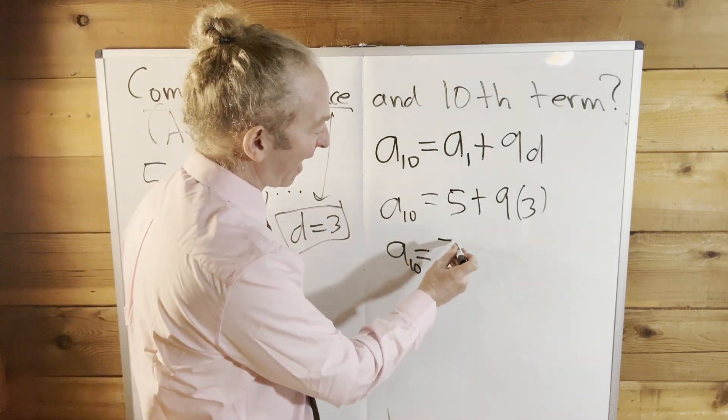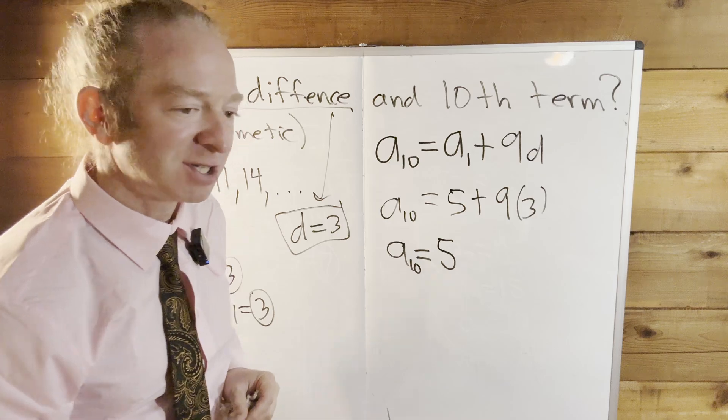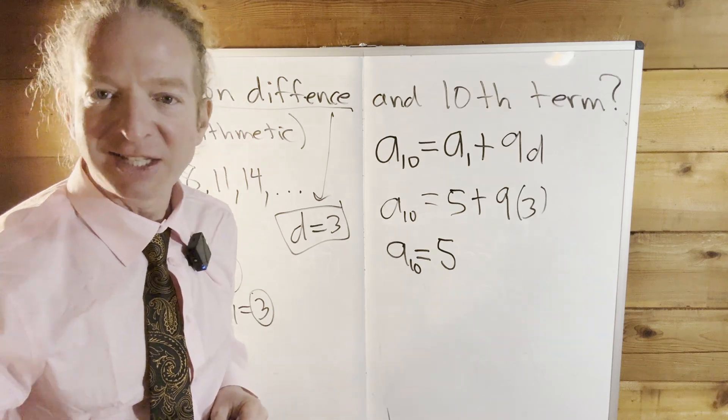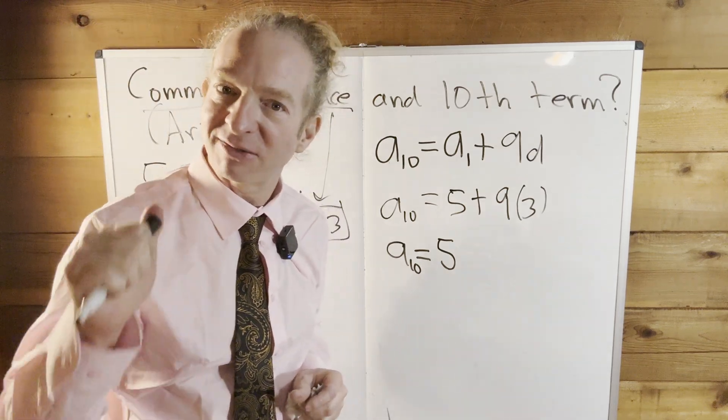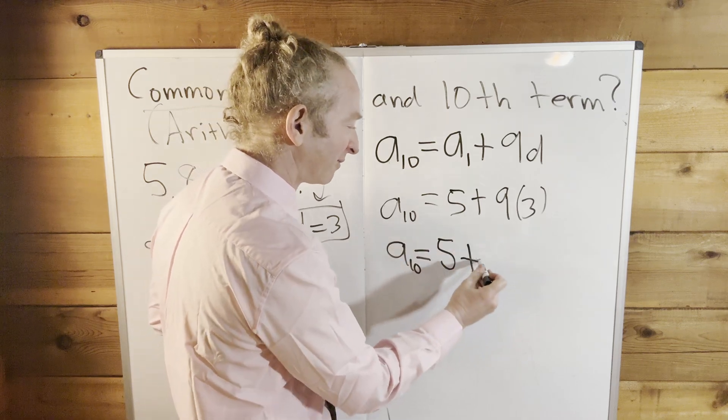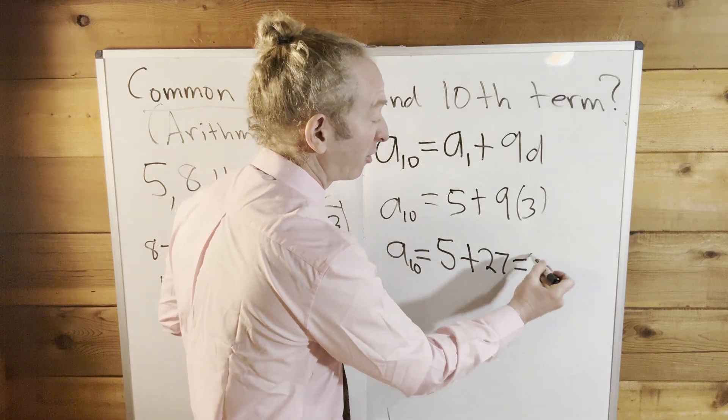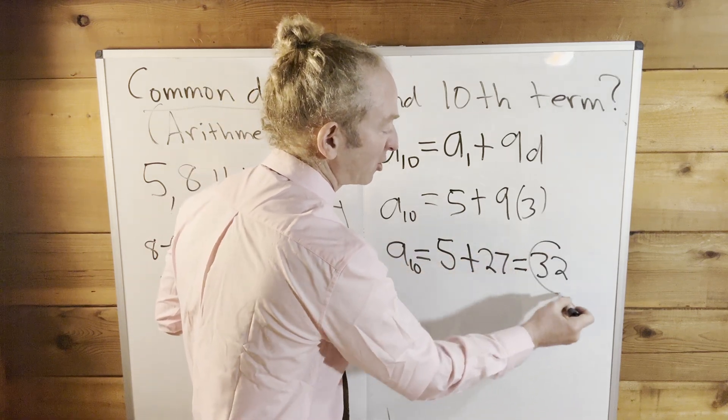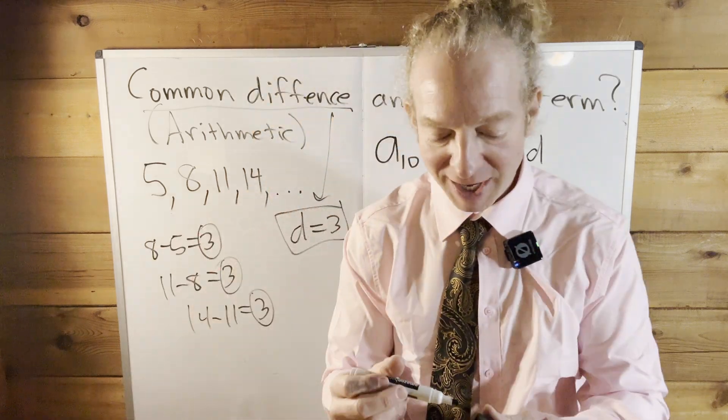So this is going to be 5 plus 9, and then little d is 3. This is where I mess up, so I'm not going to be careful. So a sub 10, time to pull out the big calculator. No, I'm kidding, I'm kidding. 5, I always think of those mathematicians in like the 1800s, they didn't have calculators, right? They just grinded it out.